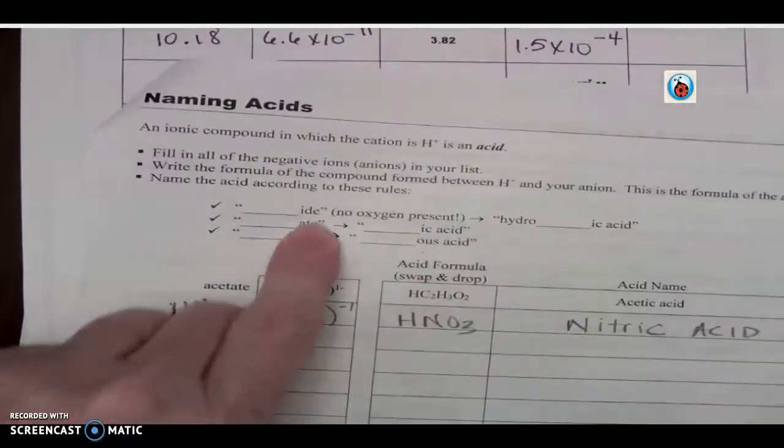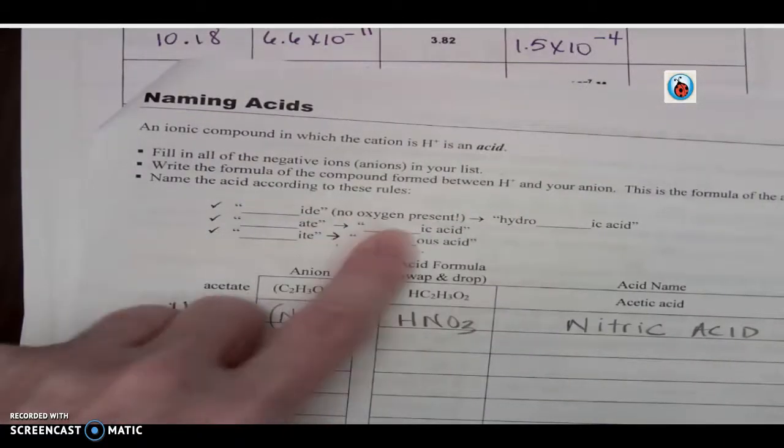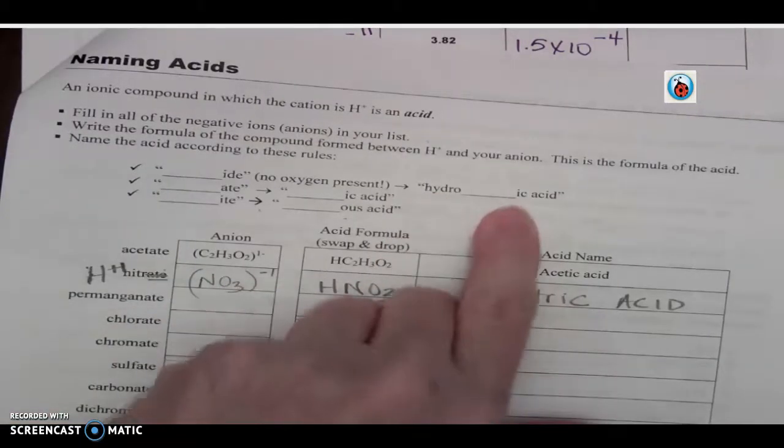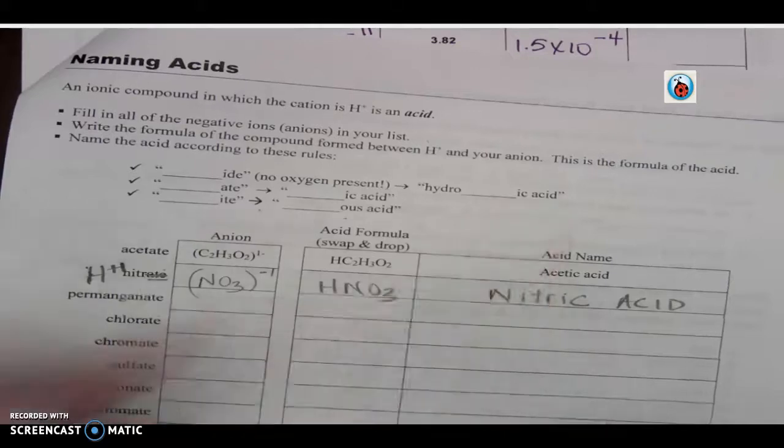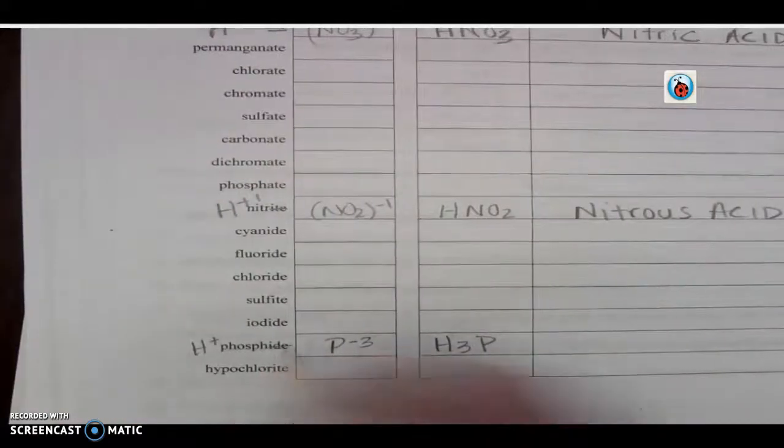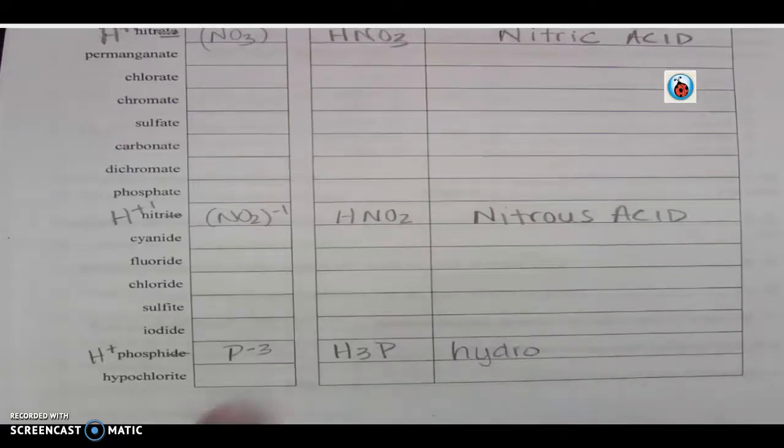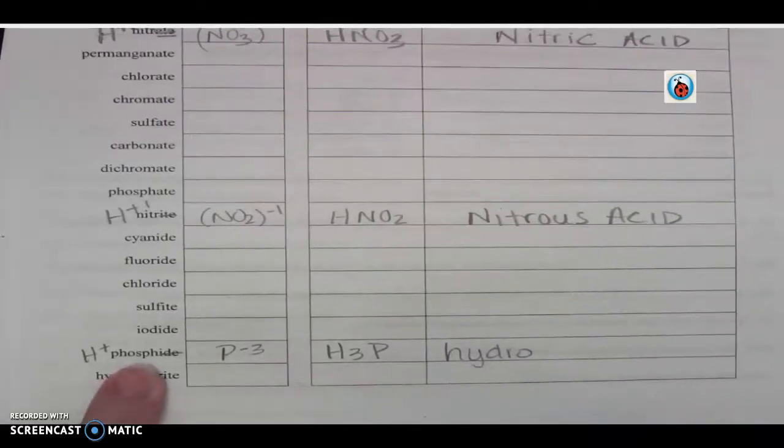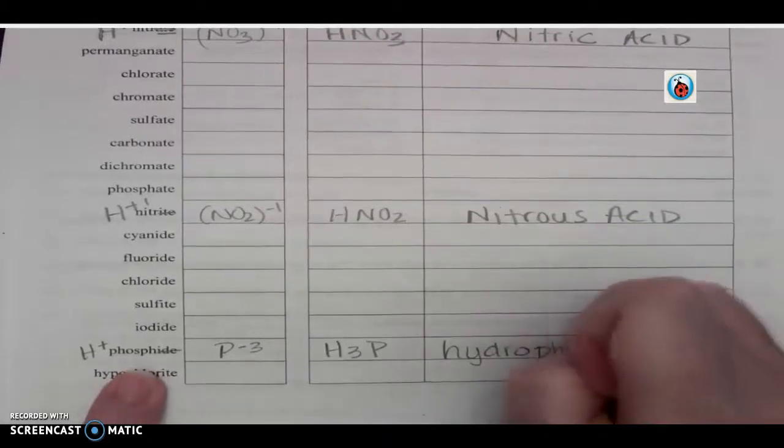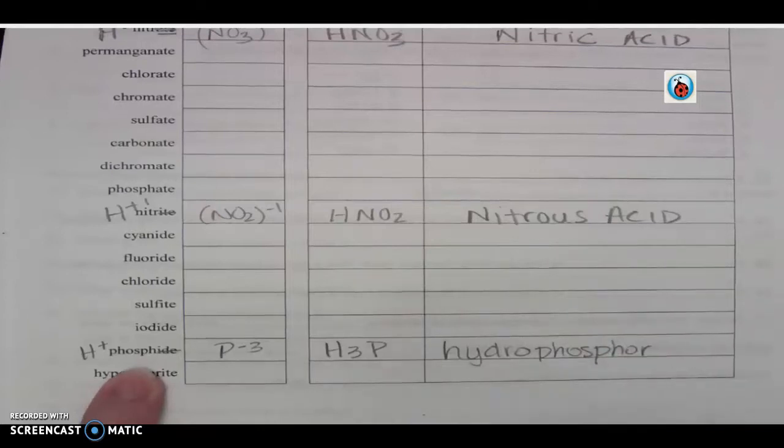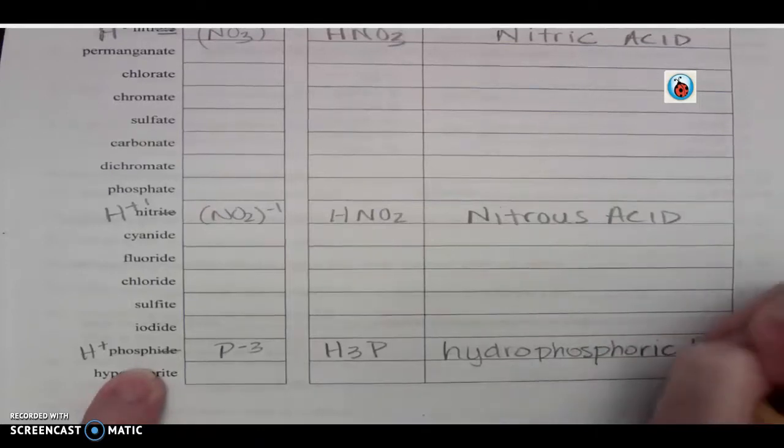Let's look how to name this. That ends in -ide. It says it ends in -ide and there's no oxygen - what do I do? I put hydro- in the front, drop off the -ide, and add -ic. So I'm going to drop off the -ide, so I have to put hydro- in the front. Hydro- - only the ones that end in -ide get hydro-. Hydro-phosph- and here you have to add that -or- back in - phosphoric acid. Hydrophosphoric acid.